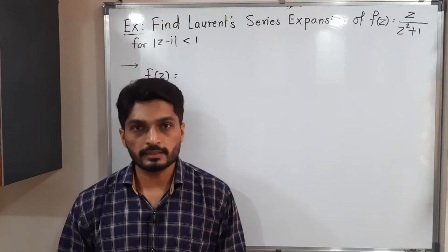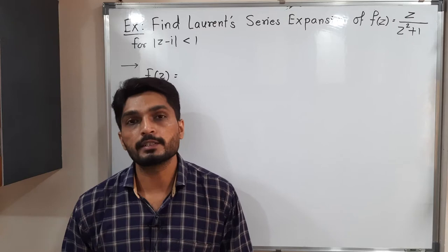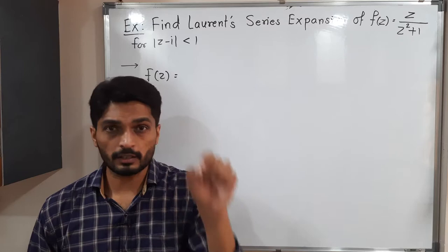Let us discuss this example. We have a function f(z) = z/(z² + 1) and we have to find its Laurent series expansion for the region |z - i| < 1. So we have to find the Laurent series in a region around a circle about z = i.